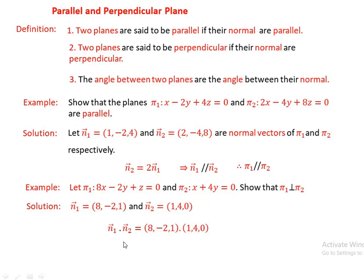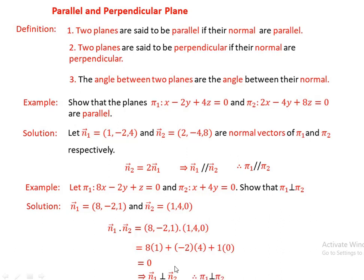Let's check whether the dot product of the two normal vectors is zero or not. n1 = (8, -2, 1) and n2 = (1, 4, 0). n1 dot n2 = 8 times 1 plus minus 2 times 4 plus 1 times 0 = 8 minus 8 plus 0 = 0. Therefore n1 and n2 are perpendicular, and hence pi1 and pi2 are perpendicular.